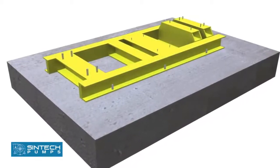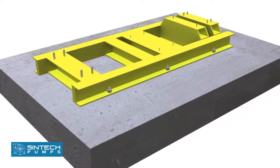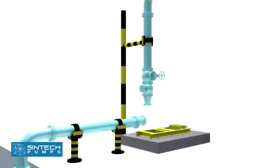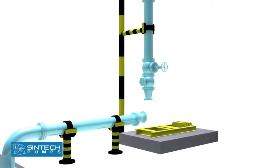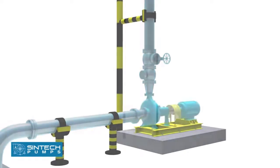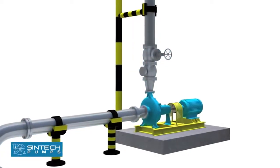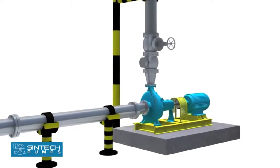The foundation bolt of proper size should be embedded in the concrete and base plate tightened, ensuring that it is level in all directions. Piping associated with the pump must be anchored and supported independently of the pump and should never put any strain on the pump casing. When the pipes are not supported, their weight is borne by the pump casing and may cause them to crack or deflect.